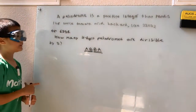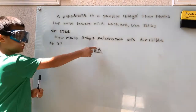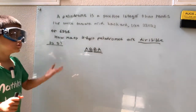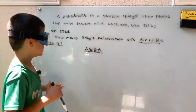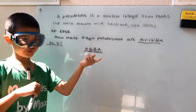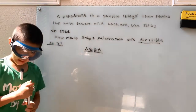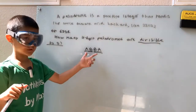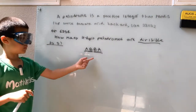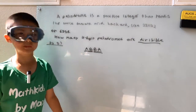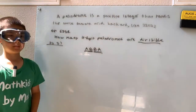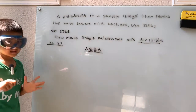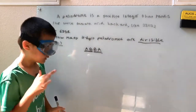Now, how does divisibility by 3 affect our AB? The divisibility rule for 3 says the sum of all digits must be divisible by 3. So A plus B plus B plus A must be divisible by 3. If A plus B isn't divisible by 3, then the total won't be either. So our two-digit number AB has to be a multiple of 3.